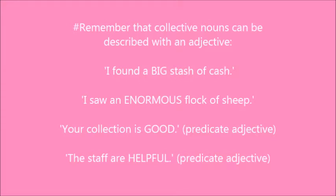Remember that collective nouns can be described with an adjective. I found a big stash of cash. I saw an enormous flock of sheep. Your collection is good — that's a predicate adjective. The staff are helpful — also a predicate adjective. That's when we're putting the adjective on the right-hand side of the sentence; the adjective doesn't have to go before the noun.